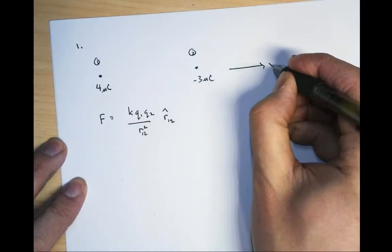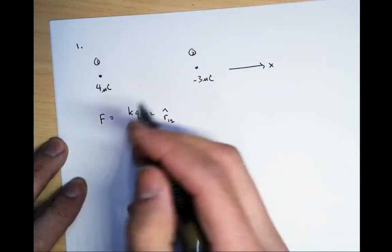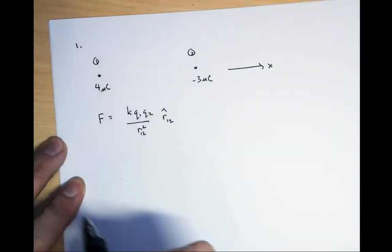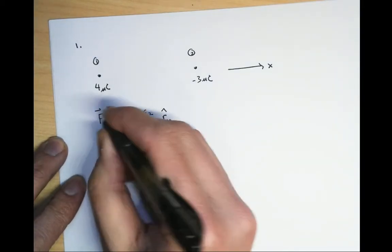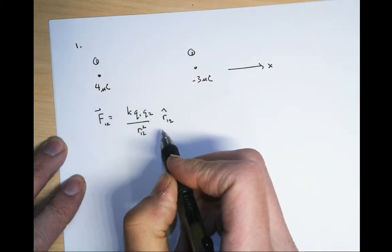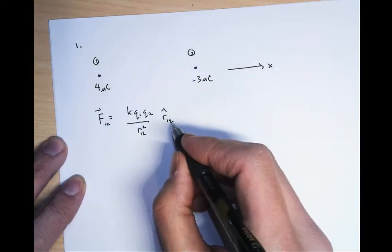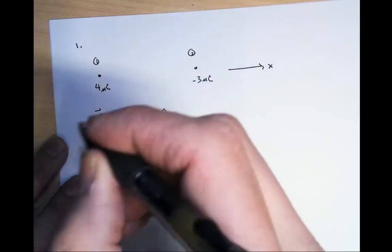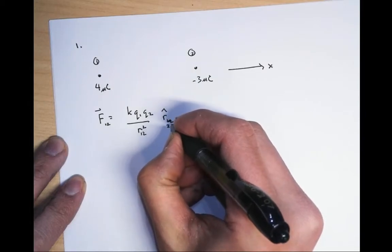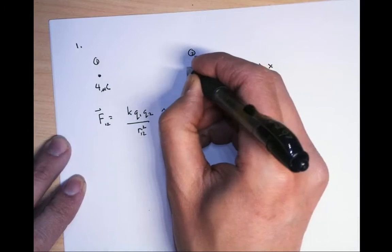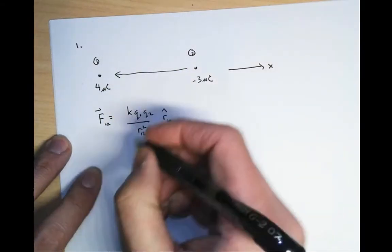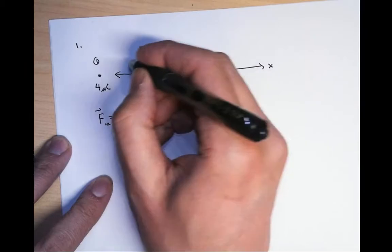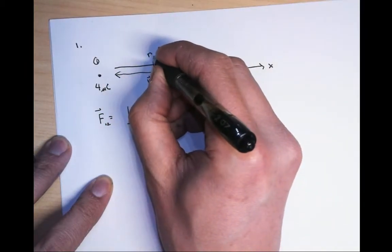Let's draw an axis here — the x-axis. We're going to consider the forces between one and two. This is r12, pointing in the minus x-hat direction, and this is r21, going from two back to one, pointing in the plus x-hat direction.